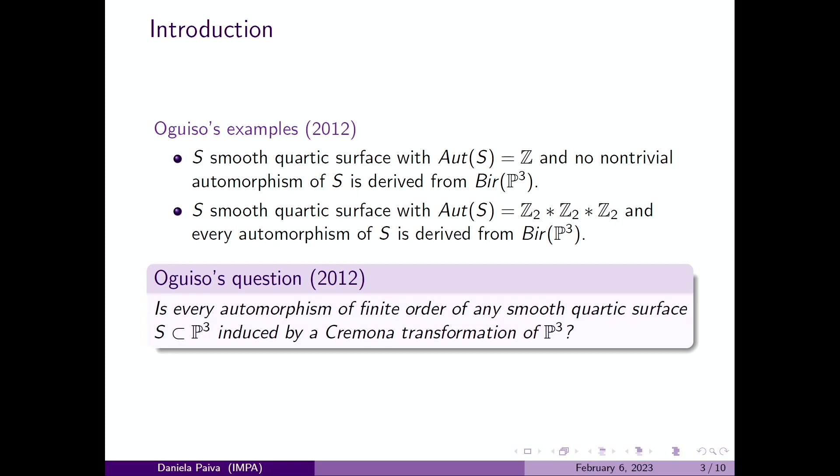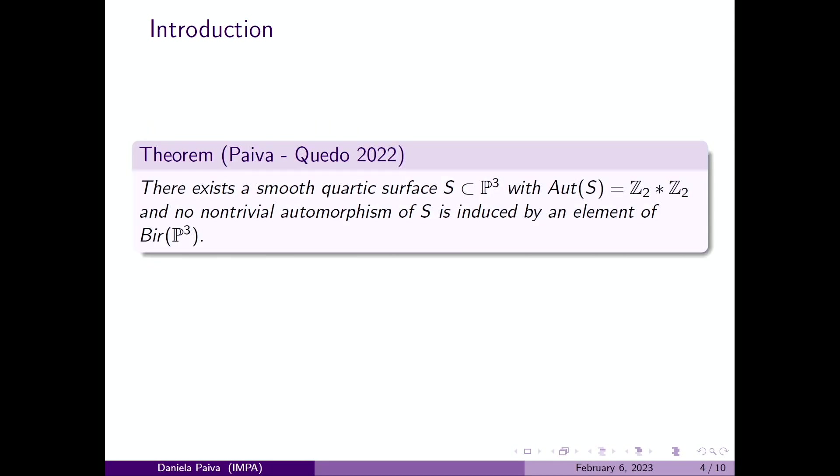A natural question that Ogizo asked was: is every automorphism of finite order of any smooth quartic surface induced by Cremona transformation of P³? Recently we've been looking at this problem and in fact we proved that there exists a smooth quartic surface in P³ where the automorphism group is this product here, and the non-trivial automorphism of the surface is induced by birational maps of P³.